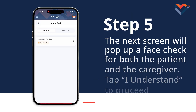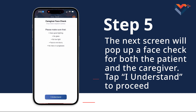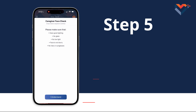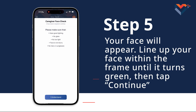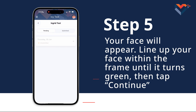For Step 5, the next screen will pop up a face check for both the patient and the caregiver. This happens when you're away from the patient's home and every 7 days. This screen will guide you through what is needed for a proper face check, including good lighting, no glare, no low light, that your face is not blurry and you have no hats or sunglasses on. Once you're ready, tap 'I Understand' to proceed. Your face will appear. Line up your face within the frame until it turns green, then tap continue.